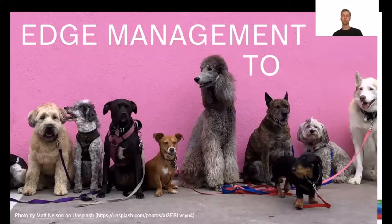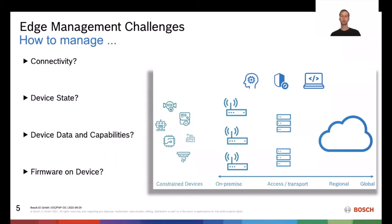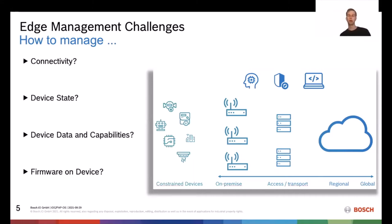To get to that situation, you need to answer a few questions. First: how do I manage connectivity between on-premise devices and the cloud? Next: how do I record the device state without always talking to the device directly? Then: how do I know what my device is capable of doing and what data it can deliver or receive? And finally: how do I manage the firmware on the device? Managing software state is becoming more and more important in edge and IoT.